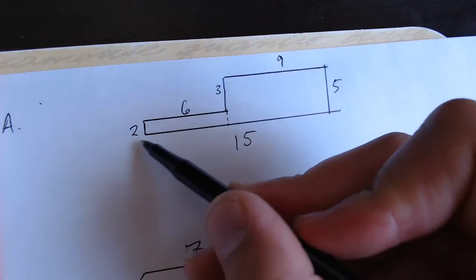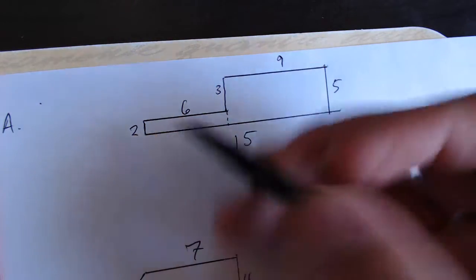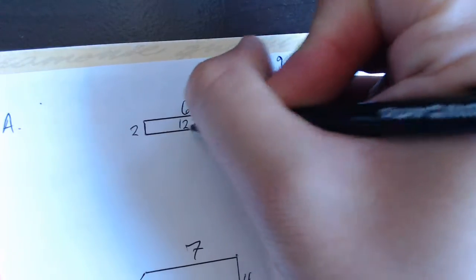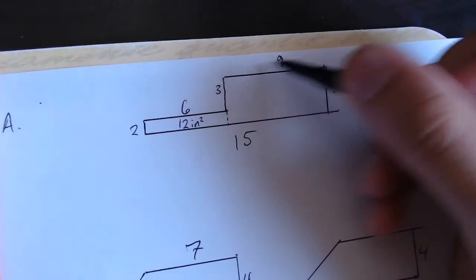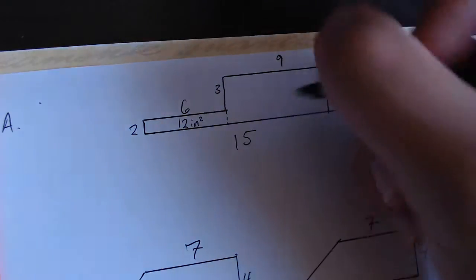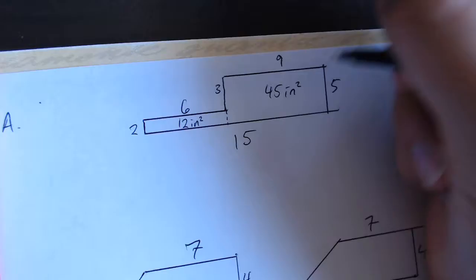The area of the small rectangle would be the base of 6 times the height of 2, which makes that one 12 inches squared. Here this one would be the base of 9 times the height of 5, which gives us 45 inches squared.